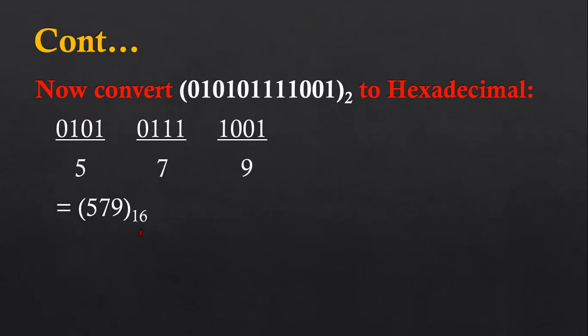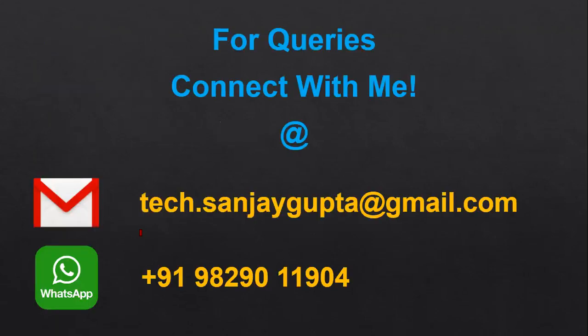If you want to convert hexadecimal to octal, first convert hexadecimal to binary, then make groups of three bits, convert each three-bit group into decimal, and combine all digits to find the equivalent octal number. This way I have explained all five shortcut methods to convert a number from one base into another.